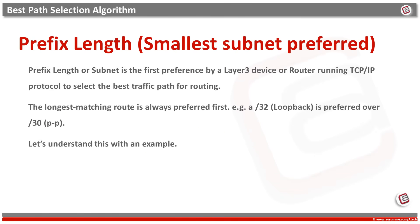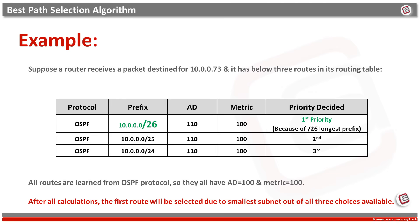If a router receives multiple routes for the same destination, it chooses the route with the smallest subnet, or we can say the longest prefix. For example, a /32 loopback is preferred over a /30 point-to-point address. Suppose a router receives a packet destined for IP address 10.0.0.73 and has three routes in its routing table. All routes are learned from OSPF, so they all have admin distance 110 and equal metric of 100. After all calculations, the first route will be selected because it has the smallest subnet. Even if admin distance or metrics were different, the first route would still be chosen because prefix length is the first preference.